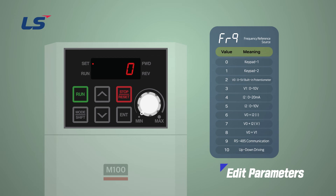When entering the edit screen, the previously set value blinks. Here, the meaning of the numbers is the same as the table shown on the screen. That is, if it is 0, it is set as Keypad 1, meaning the frequency set by the keypad on the initial screen is used as the target. We will not change this parameter.